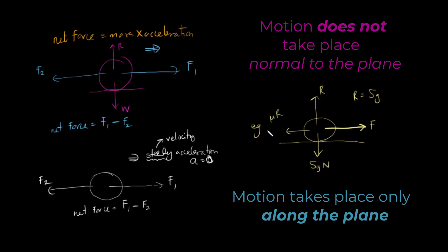The maximum friction is mu R. Suppose mu is 0.5 — this is given — and R we know is 5G. So maximum friction is going to be 2.5G Newton.